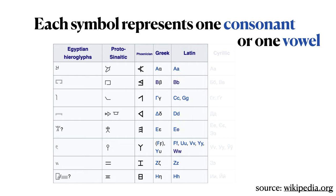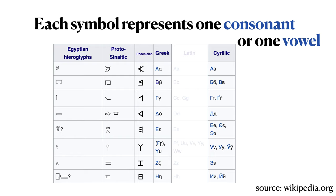The Greek letters led directly to the development of the Latin alphabet, which is the system that we use today. There are many other languages besides English that also use variants of the Latin alphabet. The Cyrillic alphabet developed independently, also from Greek.